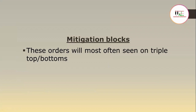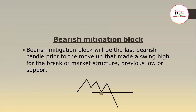The mitigation blocks are orders that we most often see on triple tops or triple bottoms. The bearish mitigation block will be the last bearish candle prior to the move up that made a swing high for the break of market structure, previous low, or support. In this example, you can see we have this high, but for the mitigation blocks, these new highs will not be above the previous highs. And these lows — sometimes they can be equal lows or they can trade below the previous low, but they'll not be the very big range.